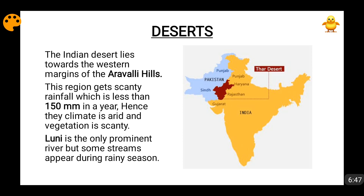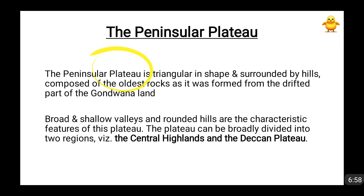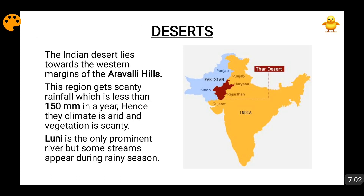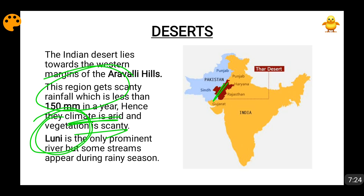Then comes the desert. The Aravalli hills stretch through Rajasthan, and on the western edge of the Aravalli hills lies the Indian desert. The rainfall received in this region is less than 150 mm a year, so the climate is very arid and the vegetation is also scanty. The most prominent river of this region is the Luni, which disappears in summer but reappears as streams in the rainy season.